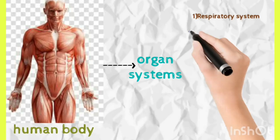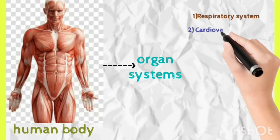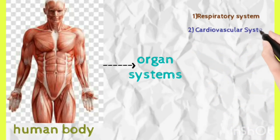Another example is the cardiovascular system, which is our heart, our blood vessels — arteries, veins, capillaries — which circulates blood through the whole body.